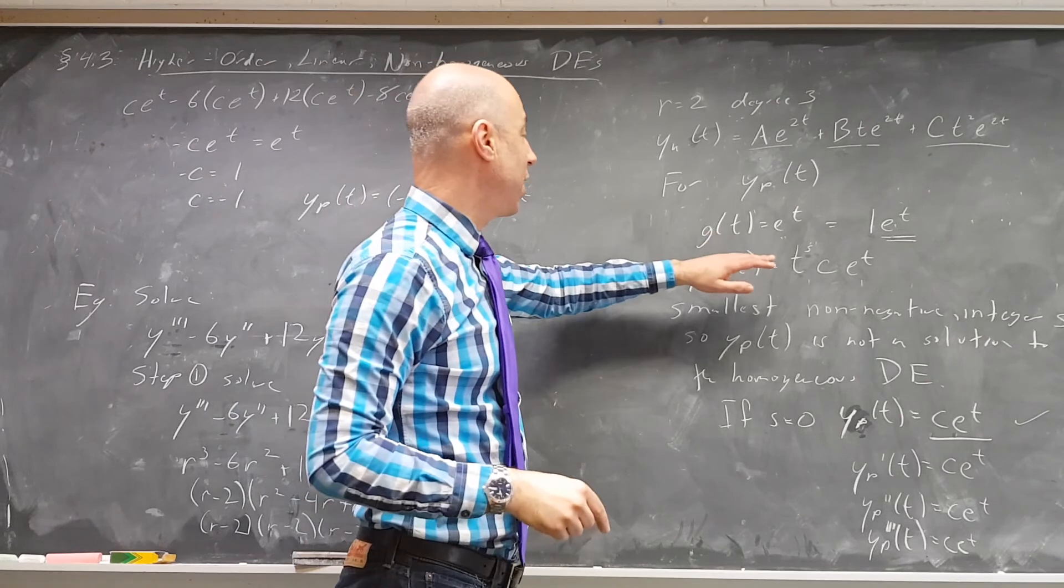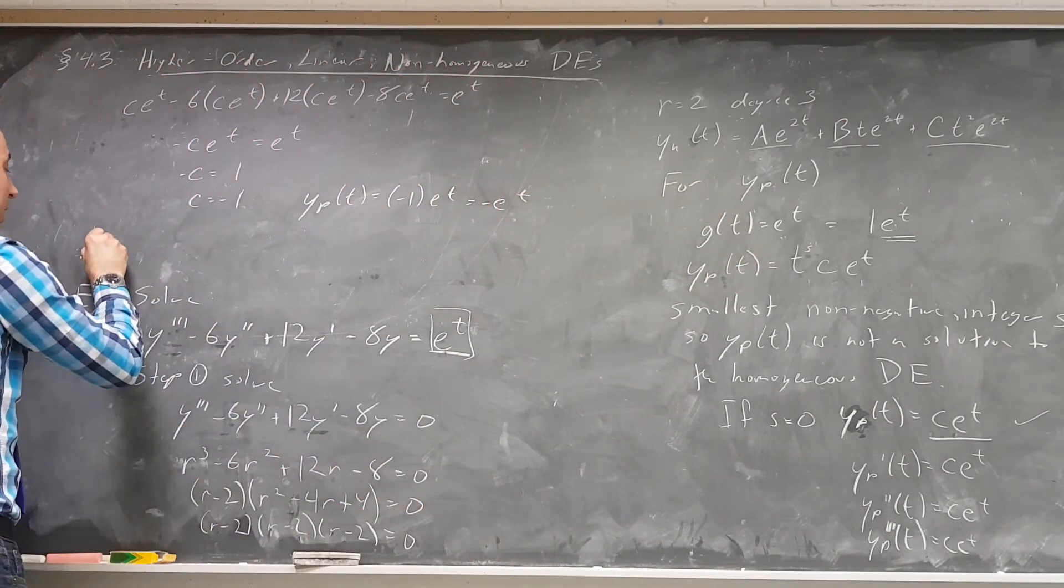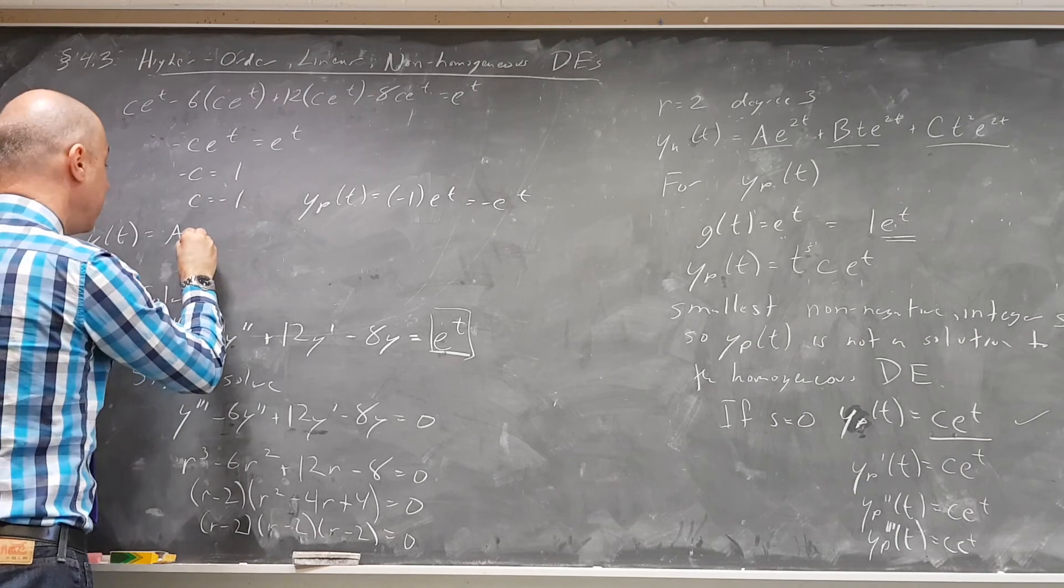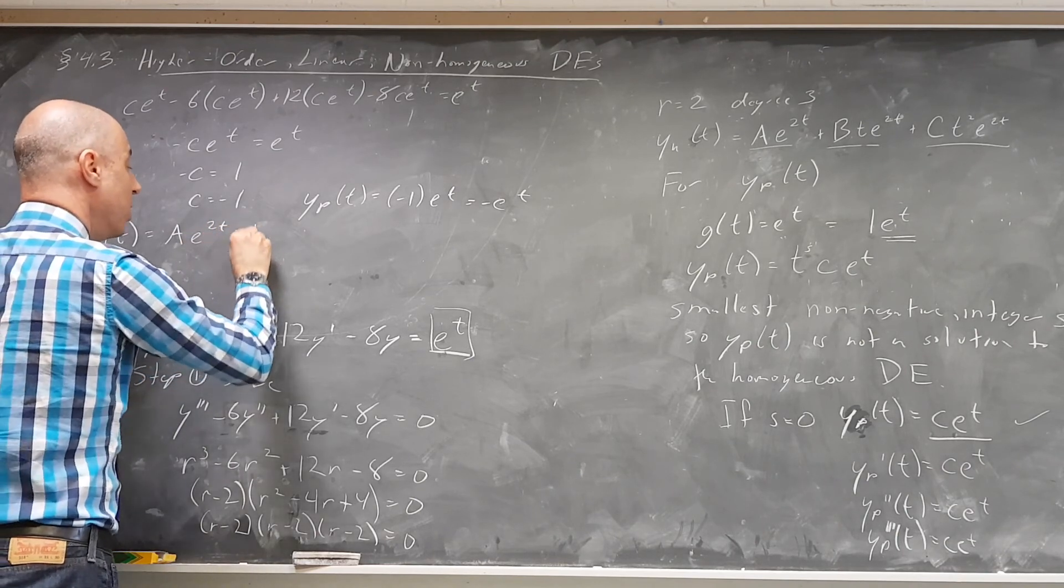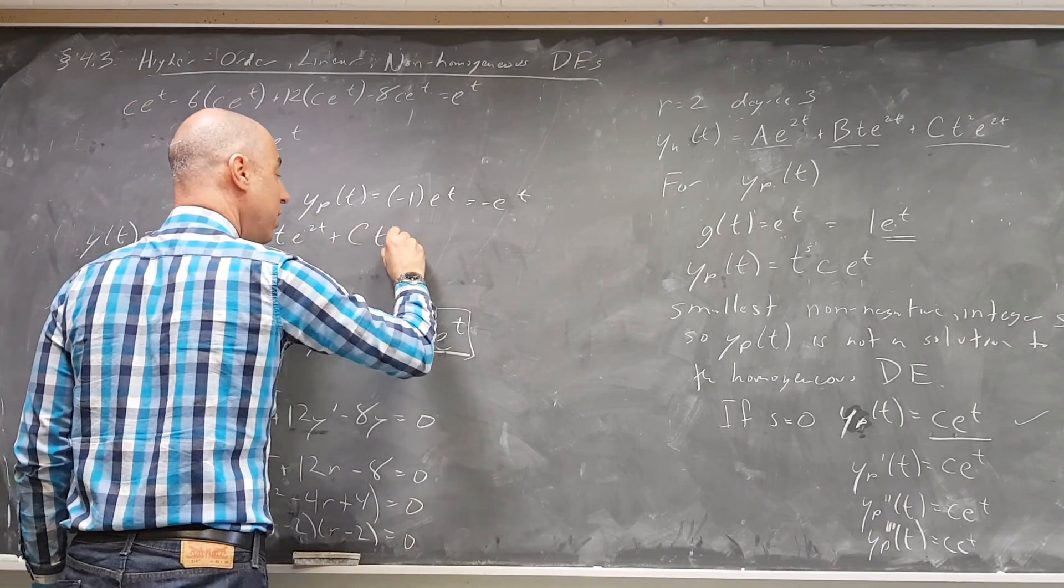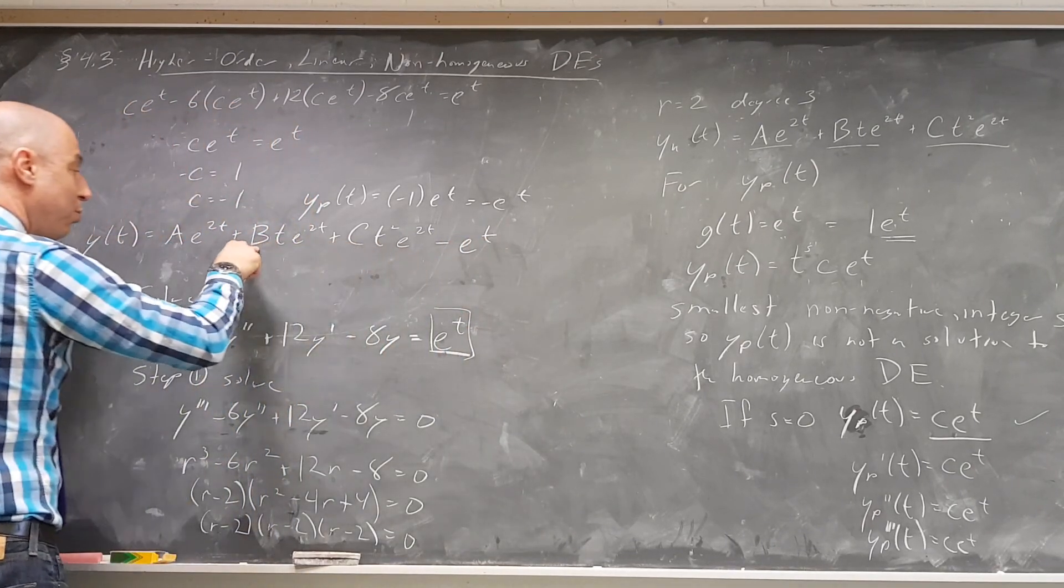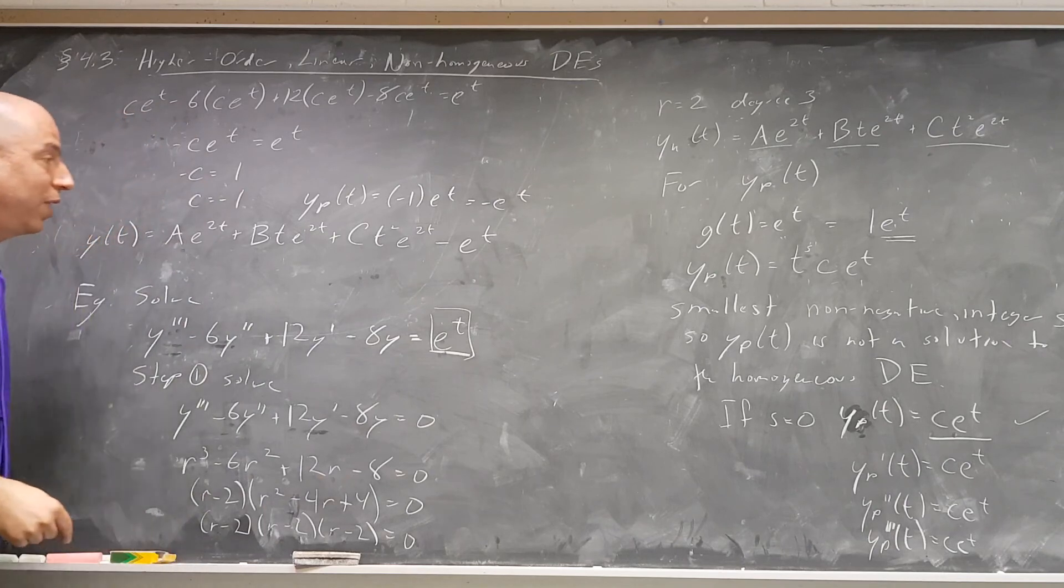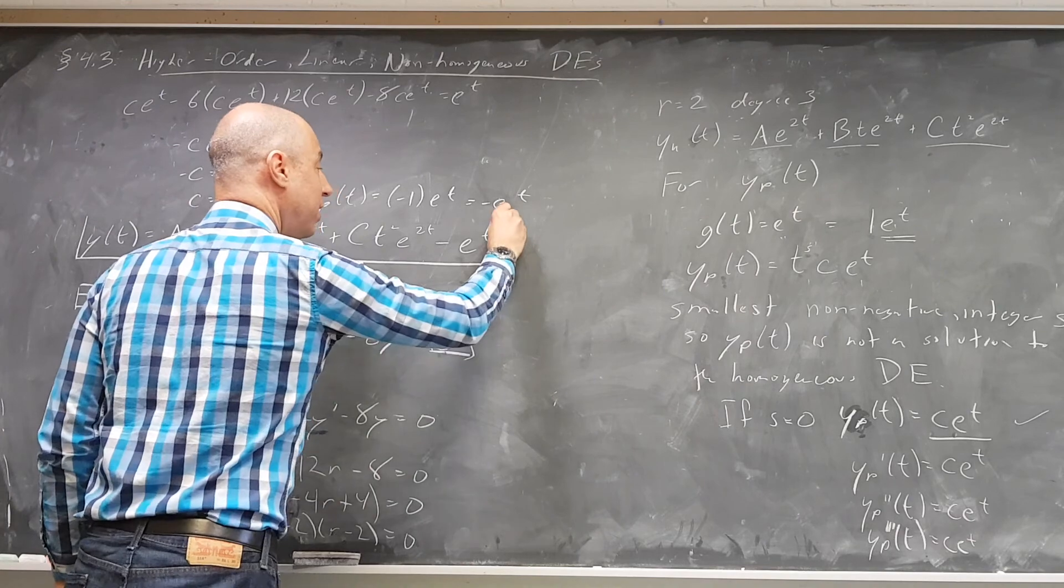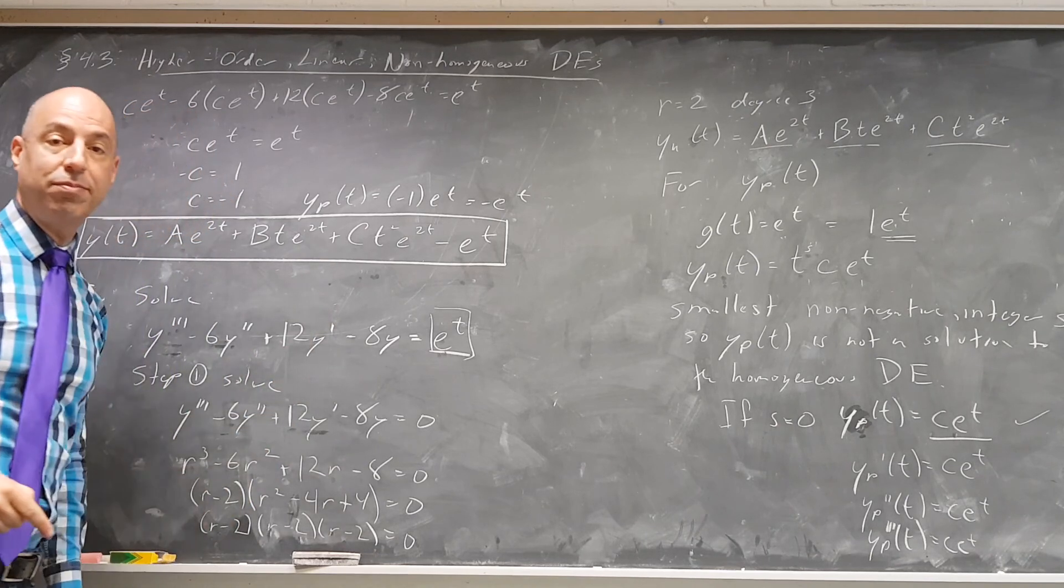We already have our y sub h. So our general solution is going to be y of t equals a times e to the 2t plus b times t e to the 2t plus c times t squared e to the 2t minus e to the t. Everything has a parameter in front of it except for our particular solution. And of course, as usual, if I gave you some initial conditions, if I gave you an initial value problem, you would be able to solve for a and b and c. Thank you.